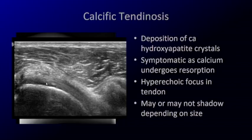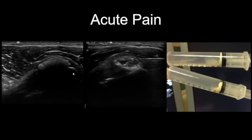So we have the subscapularis tendon, humeral head, deltoid, skin, and this extra structure — the hyperechoic calcium hydroxyapatite. This is very painful, and many times when it starts causing a bursitis, patients are unable to raise their arms. So you can really help them out with ultrasound.